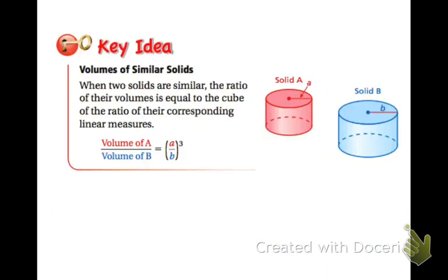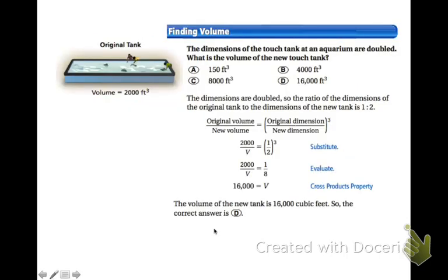We can do the same thing with volume, but as expected, the ratio of the volumes is equal to the cube of the ratio of the corresponding linear measures, whether it's a radius, or a height, or a side length, or whatever it might be. We can look at this one. We're going to find the volume. It says the dimension of this tank is doubled. What is the volume of the touch tank? The dimensions are doubled, so the ratio of the original to the new is 1 to 2. The original volume and the new volume, the original volume is 2,000, we don't know the new volume, but we know that the side length ratio would be equivalent to 1 to 2 and cube it. So cube the 1, cube the 2. We have a new proportion to solve. And 16,000 cubic feet would be the volume.